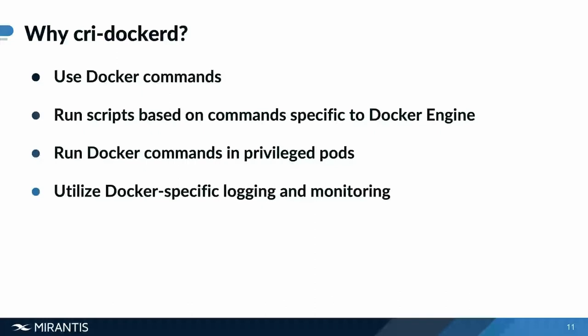By design, container D and alternative runtimes aren't really end-user facing — they're meant to be just the engine, and you won't interface directly with an engine. As a result, things like container D and alternative runtimes lack some of the commands and functionality of the Docker engine, such as the ability to use Docker commands — your docker ps to look at the list of running containers, looking at your container ID, image and port information, and so on.